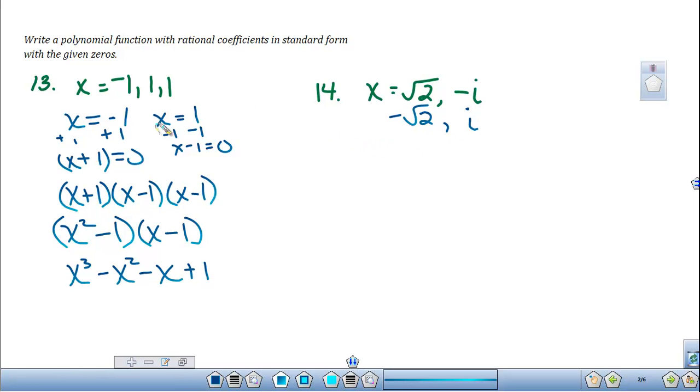Again, if we were to go back and put it in factored form, we would have x plus the square root of 2 times x minus the square root of 2 times x plus i times x minus i. And the nice thing about these four factors is that you have conjugates in both situations. So these two can be multiplied out fairly quick and so can these.